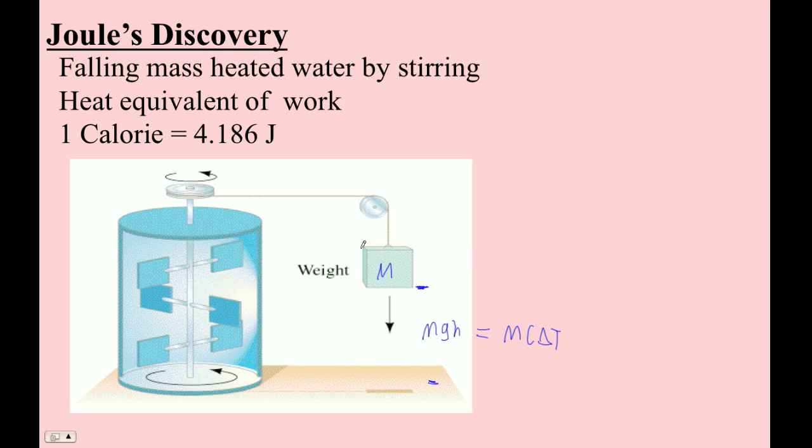The notion is that these paddles, as this weight falls, those paddles spin around. As they spin around, they hit water molecules. If you hit a water molecule, you're going to make it go faster. Faster moving water molecules is a higher temperature. So you can put a thermometer in this, and as you spun these things, it would make the water hotter. This means a fan in a closed room actually makes the air in the room hotter.